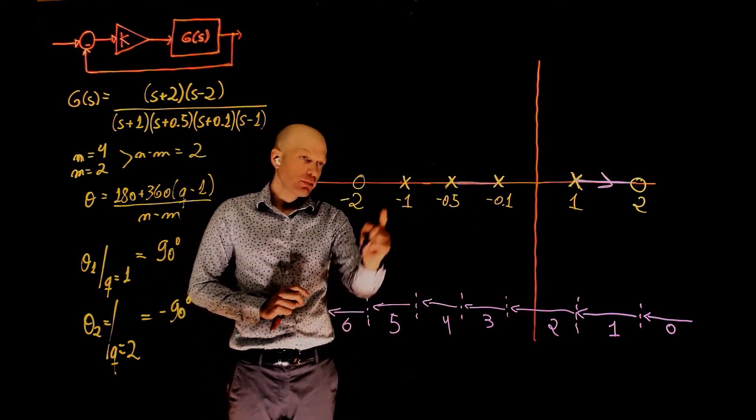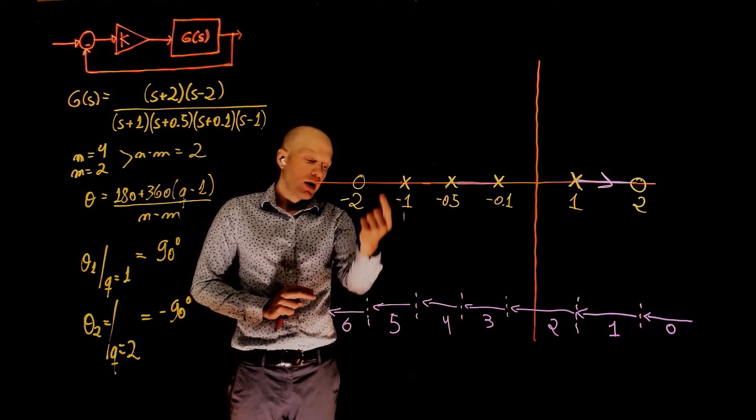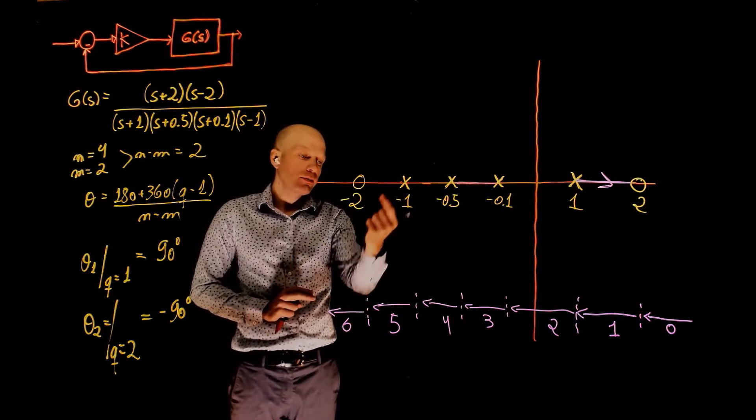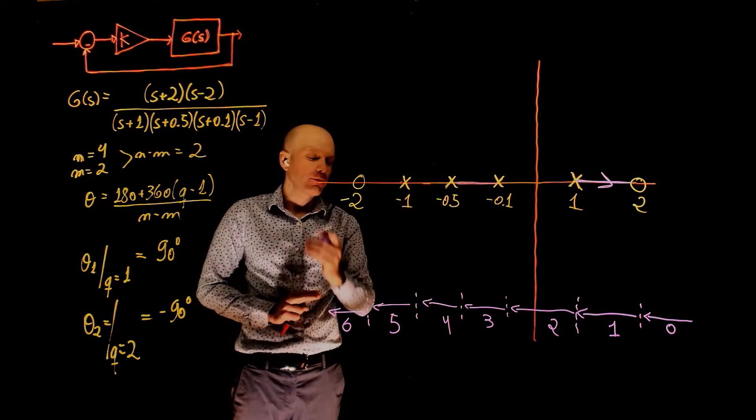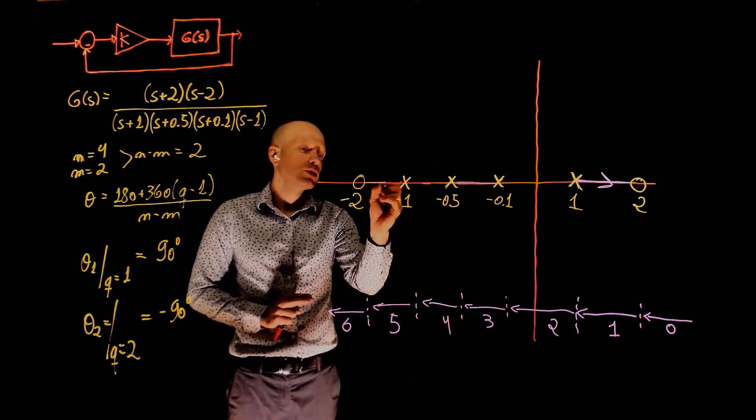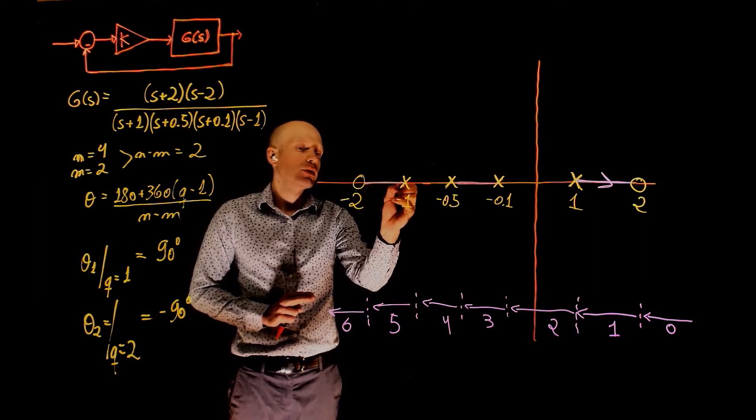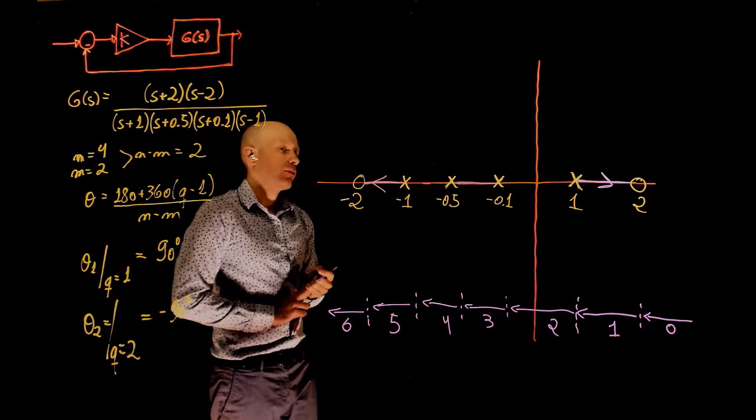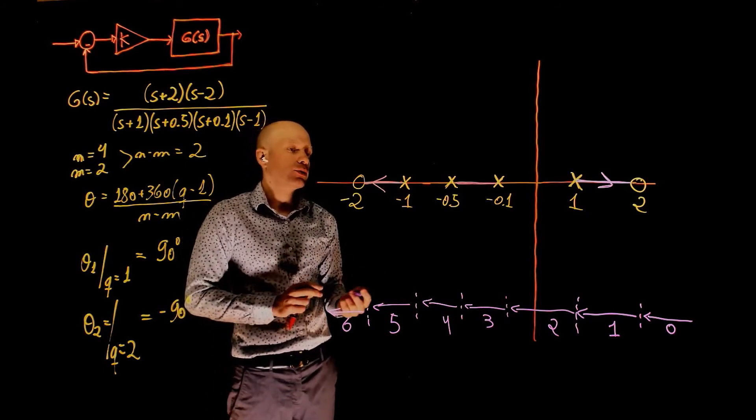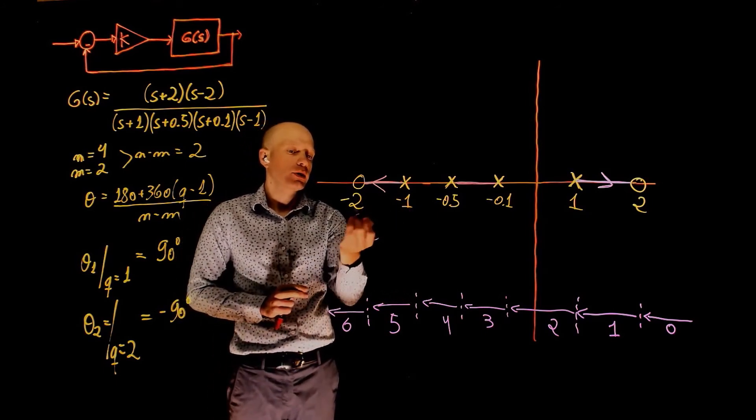And now here we have another pole and zero pair, and we have an odd number of poles and zeros between them. We are to the left of an odd number of poles and zeros, so we know that the root locus exists here. So now this pole needs to go to the zero. As k goes from zero to infinity, this pole migrates to negative two.